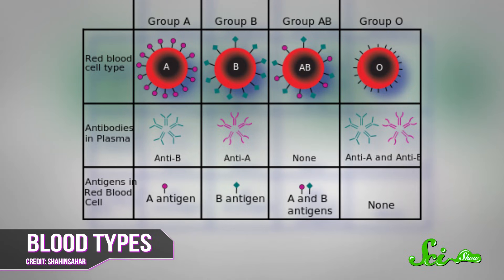On the flip side, you do have antibodies that would attack the type of antigen you don't have. So for example, if your red blood cells have A antigens, your blood type is A and your antibodies would attack type B. If you have B antigens, you're type B and you have antibodies for type A. If you have both, you're type AB and you don't have antibodies for either. And some people have neither kind of antigen — their genes code for an agglutinogen that just doesn't work, and they have antibodies for both A and B. These are called type O.